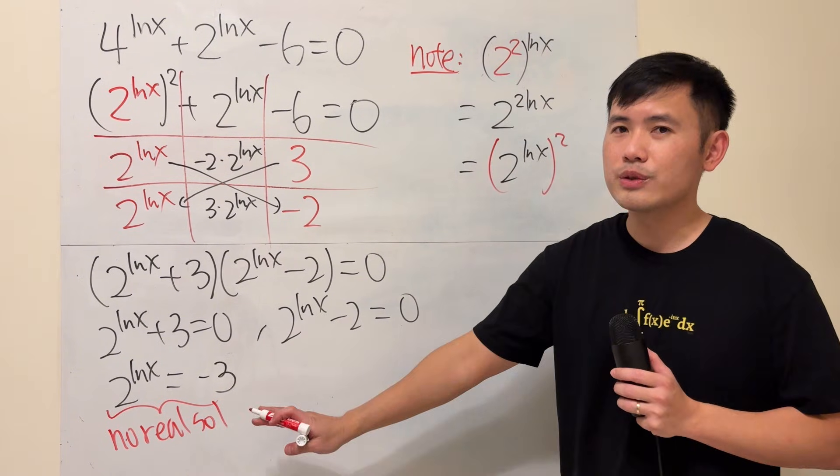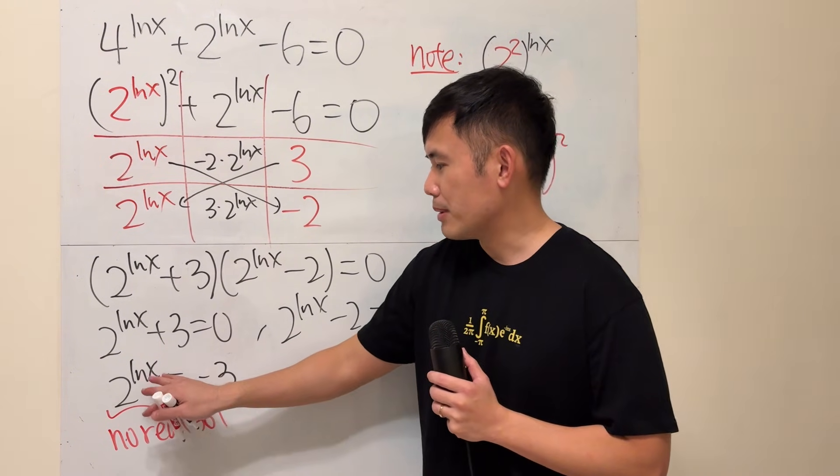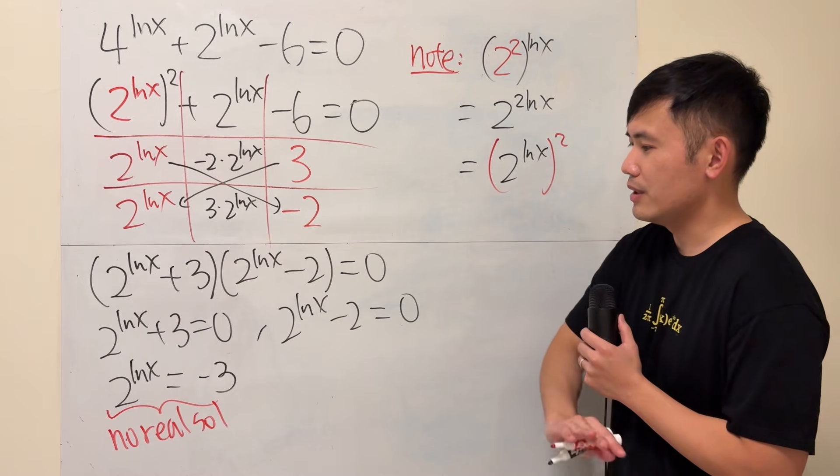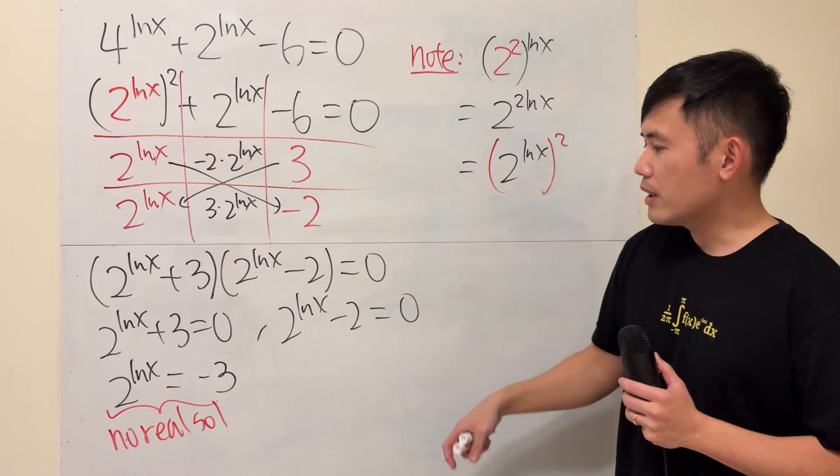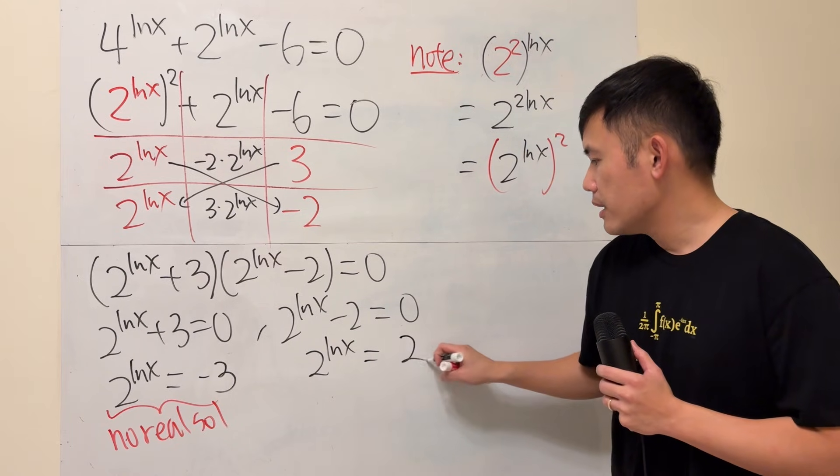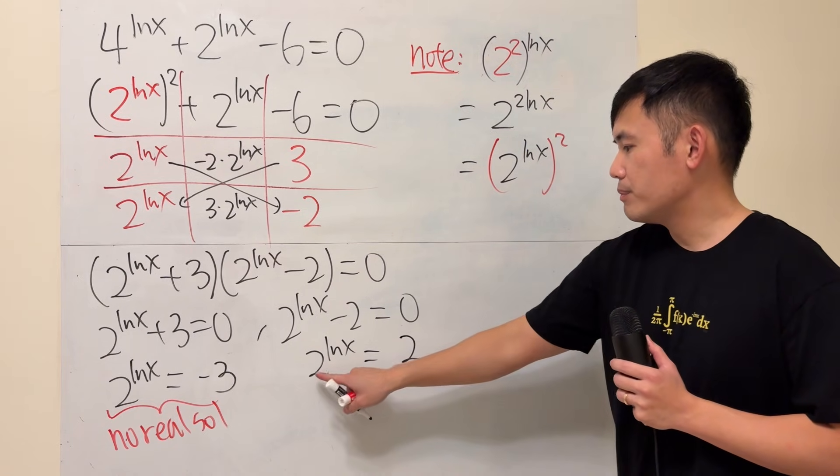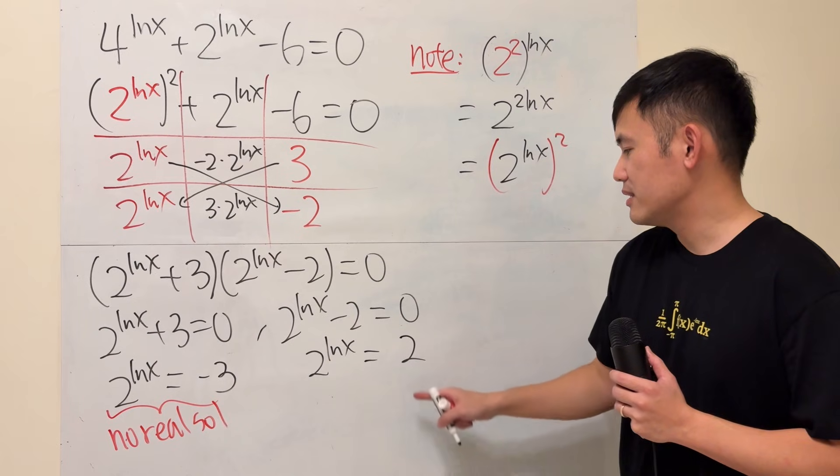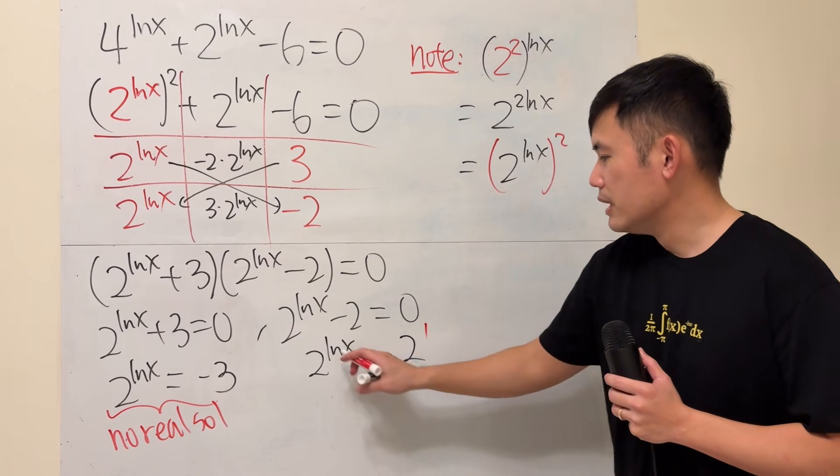And in pre-calculus, we just don't talk about the complex solution in this kind of situation. So, just ignore that. For this right here, add 2 to both sides. Add 2 to both sides. Okay. The bases are the same. Very nice. This is the same as 2 to the 1st power.